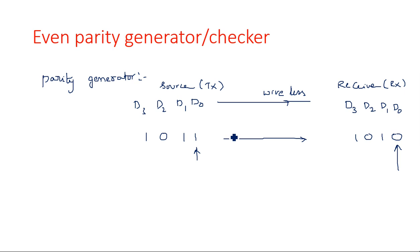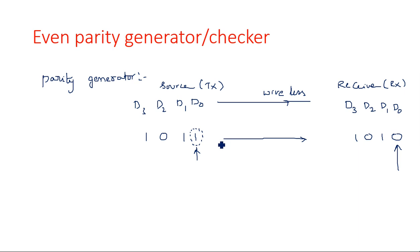So we need to identify where the error is located, and later we need to change it. Once the error is identified, it is very easy to change the information because if one is the error then zero has to be changed. Suppose if I identify that this bit has an error, this can be easily replaced. If one is the error then you have to replace it with zero; if zero is the error then you have to replace it with one. There are only two options in digital communication. So whenever the error is identified, it is very easy to replace.